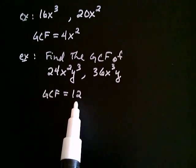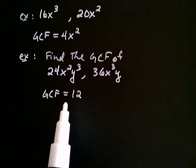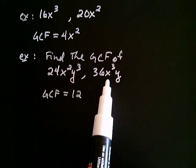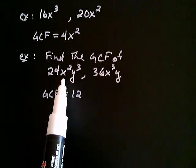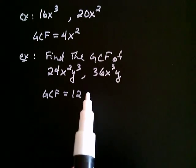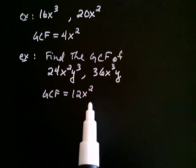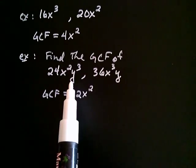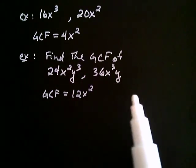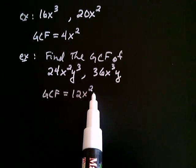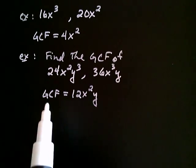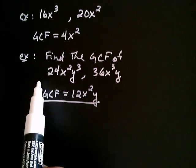They have 12 as a factor in common. Now, what about the variable parts? This one would say, 'I have two x's as factors,' and this one would say, 'I have three x's.' What do they have in common? Well, they both have two x's. Then comparing how many y's they have: this one says 'I have three y's,' and this one says 'I have one y.' How many do they have in common? They both have one y. So the GCF of these two expressions is 12x squared y — the greatest common factor of these two expressions.